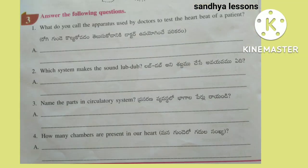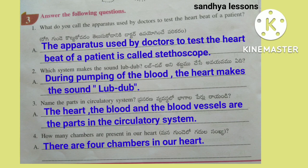Third, answer the following questions. First question: What do you call the apparatus used by doctors to test the heartbeat of a patient? The apparatus used by doctors to test the heartbeat of a patient is called a stethoscope. Second question: Which system makes the heart produce the sound 'lub-dub' during pumping of the blood?